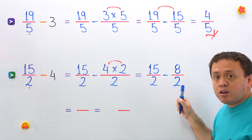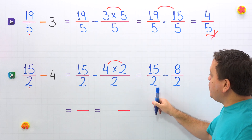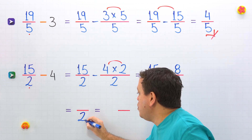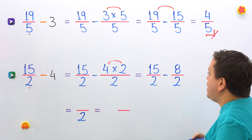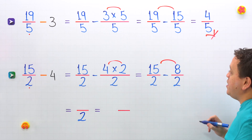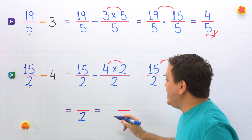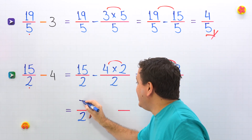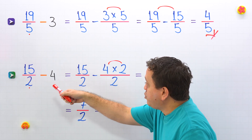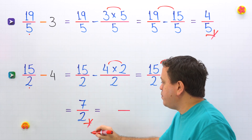We need to subtract these two fractions with the same denominator. We have 2 on both sides, so we put 2 as the denominator and continue by subtracting the numerators: 15 minus 8 gives us 7. In that way, 15 halves minus 4 gives us 7 halves.